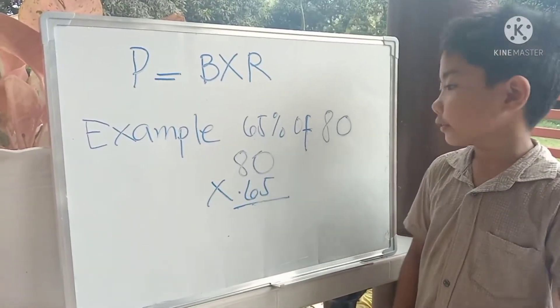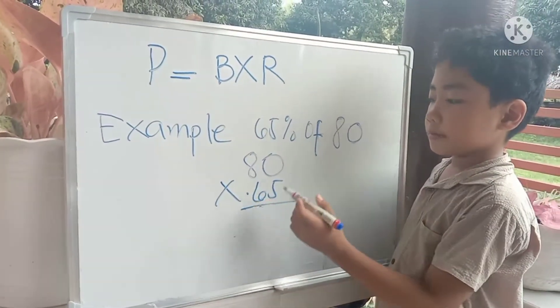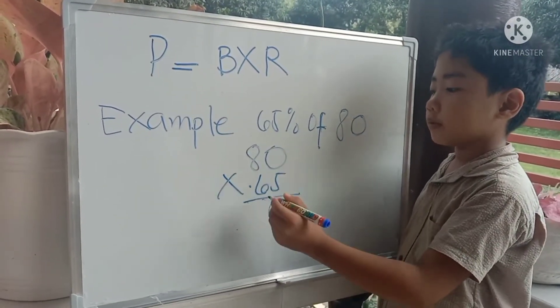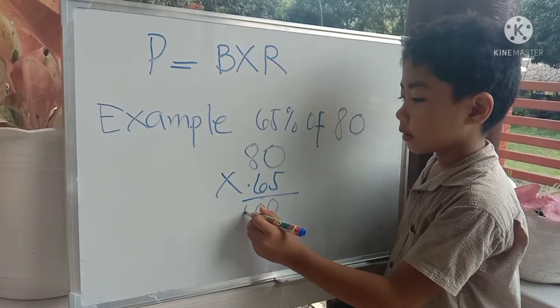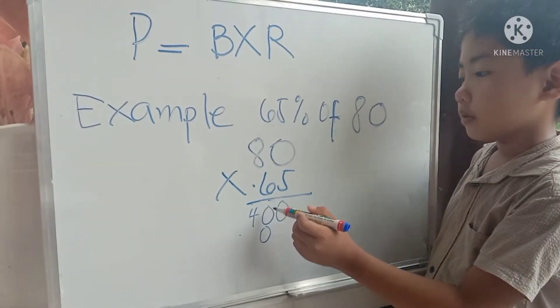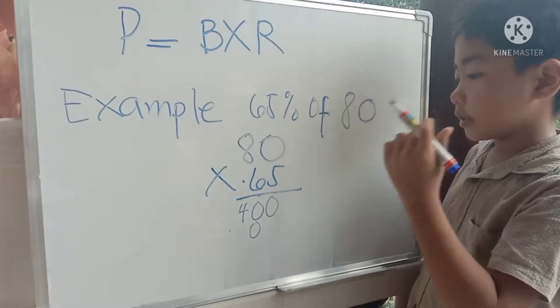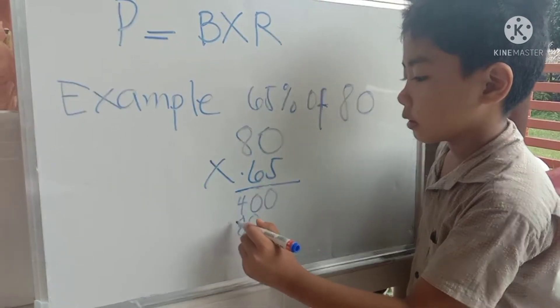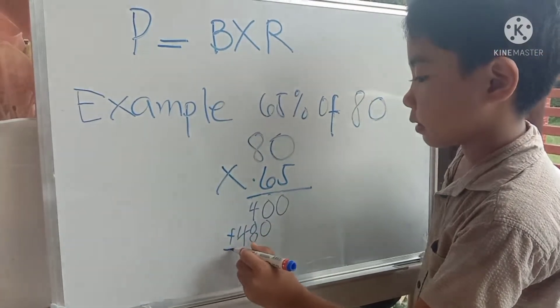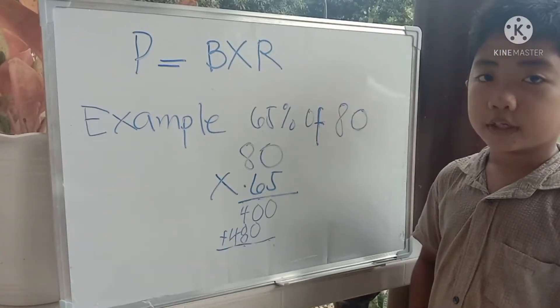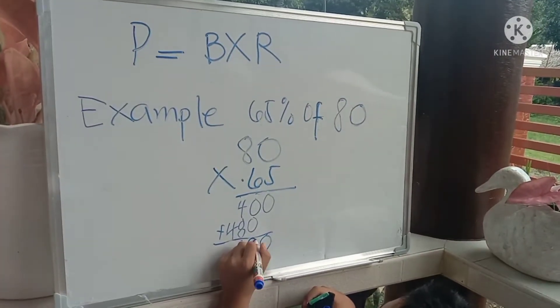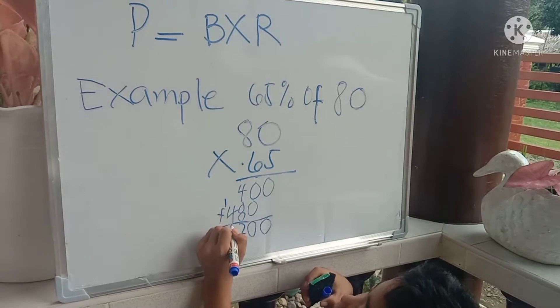Let's proceed to multiplication. 5 times 0 equals 0. 5 times 8 equals 40. 6 times 0 equals 0. 6 times 8 equals 48. Plus. Let's proceed to addition. 0, 0, 12, 5.